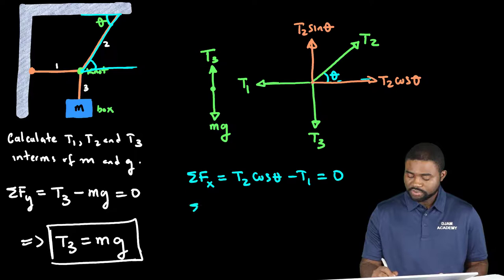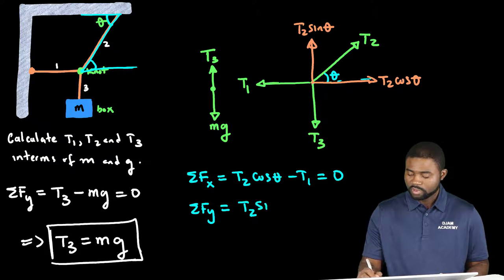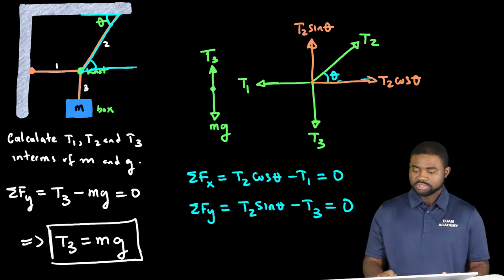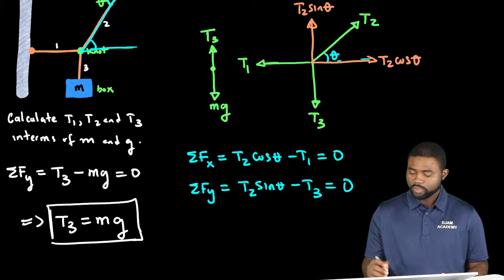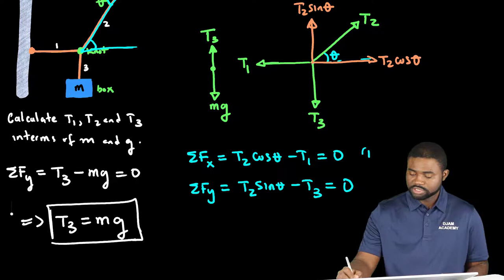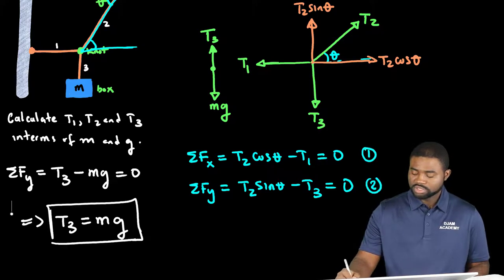Now similarly, the sum of forces along the y direction would mean that T2 sine theta minus T3 will be equal to zero. Hence, let's label this equation 1 and this equation 2.